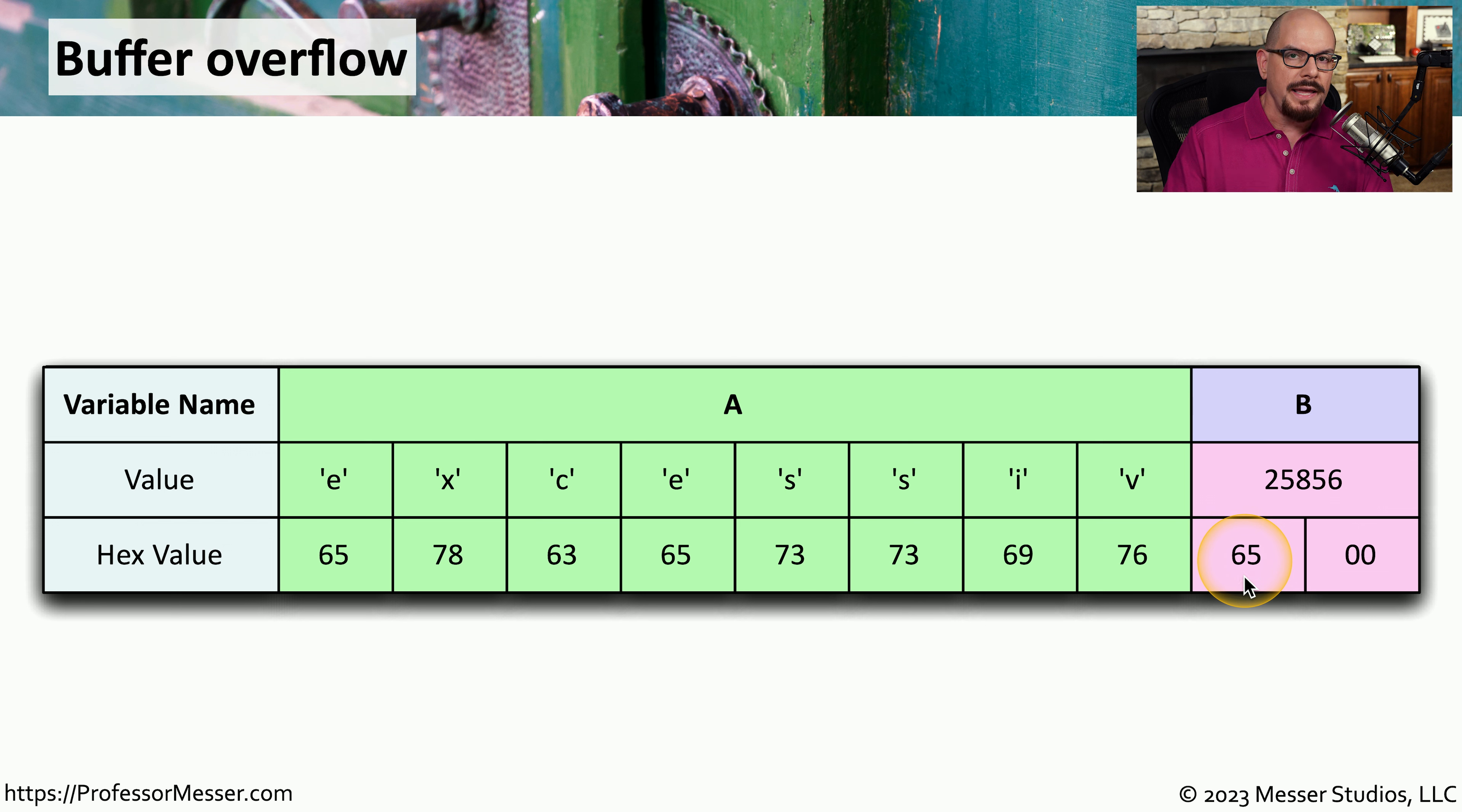And the ninth letter E, which is also the same as hex value 65, is stored as the first byte of variable B as it overflows into that particular variable.